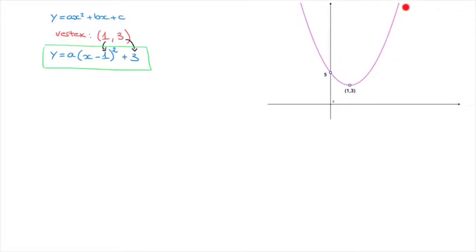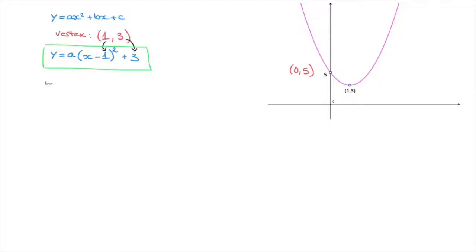Looking at the graph, we can see that we're given the y-value at which the parabola cuts the y-axis — in other words, we're given this curve's y-intercept, and its coordinates are 0, 5. Remember, the x-coordinate of the y-intercept will always equal 0.